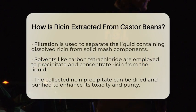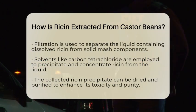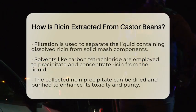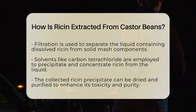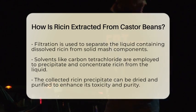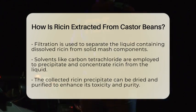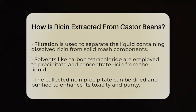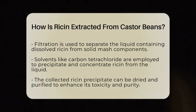After the ricin has dissolved, the next task is to separate the liquid from the solid parts of the mash. This is done through a process called filtration. The liquid that contains the dissolved ricin is collected for further processing.